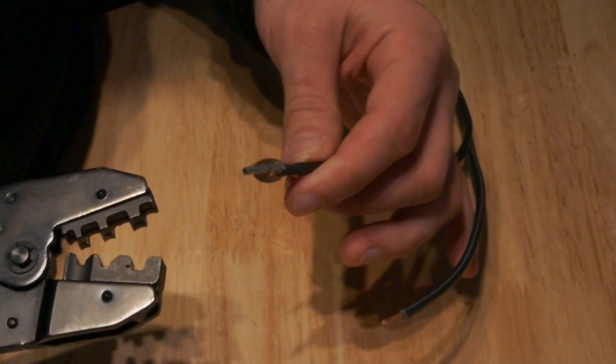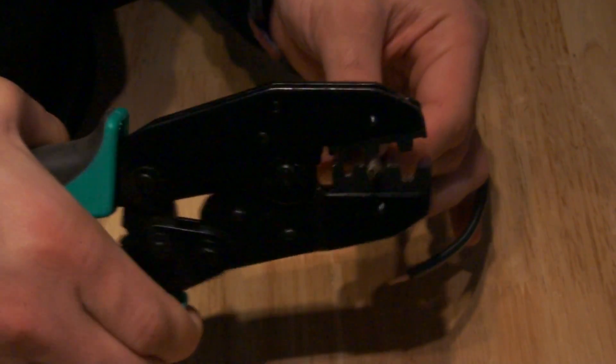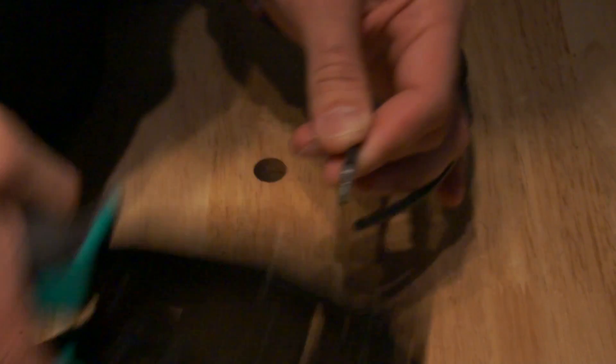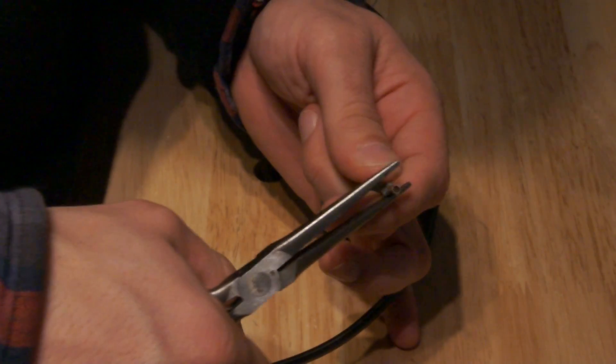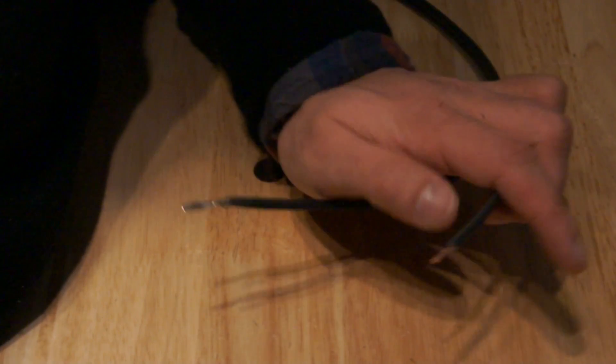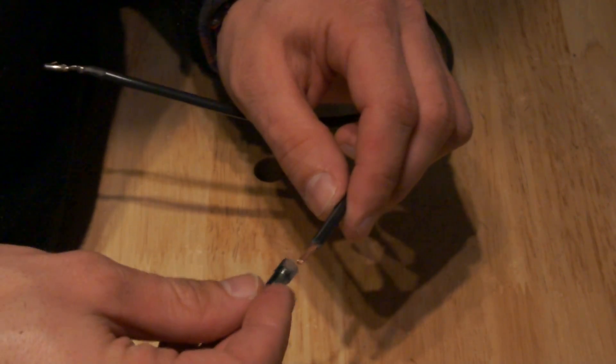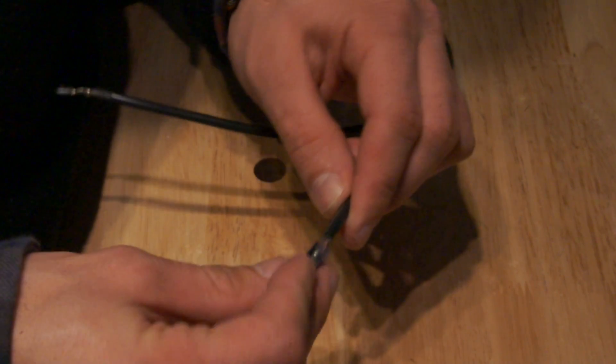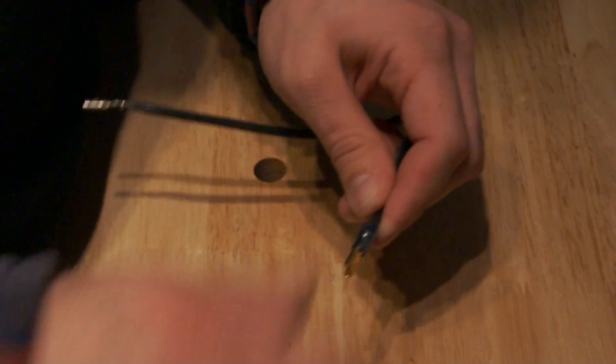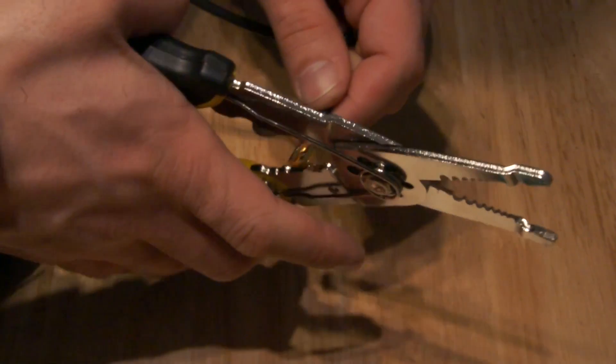On the negative wire, we'll attach a female pin. Then on the positive side of the wire, we'll put on one of our flag connectors and just crimp that on.